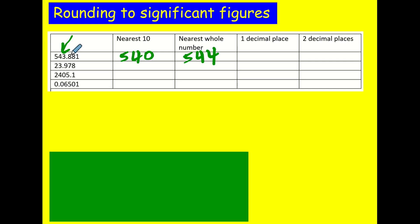One decimal place, I'm going to look here, there's an 8 after it, so it's going to be 543.9. Then two decimal places, 543.88.